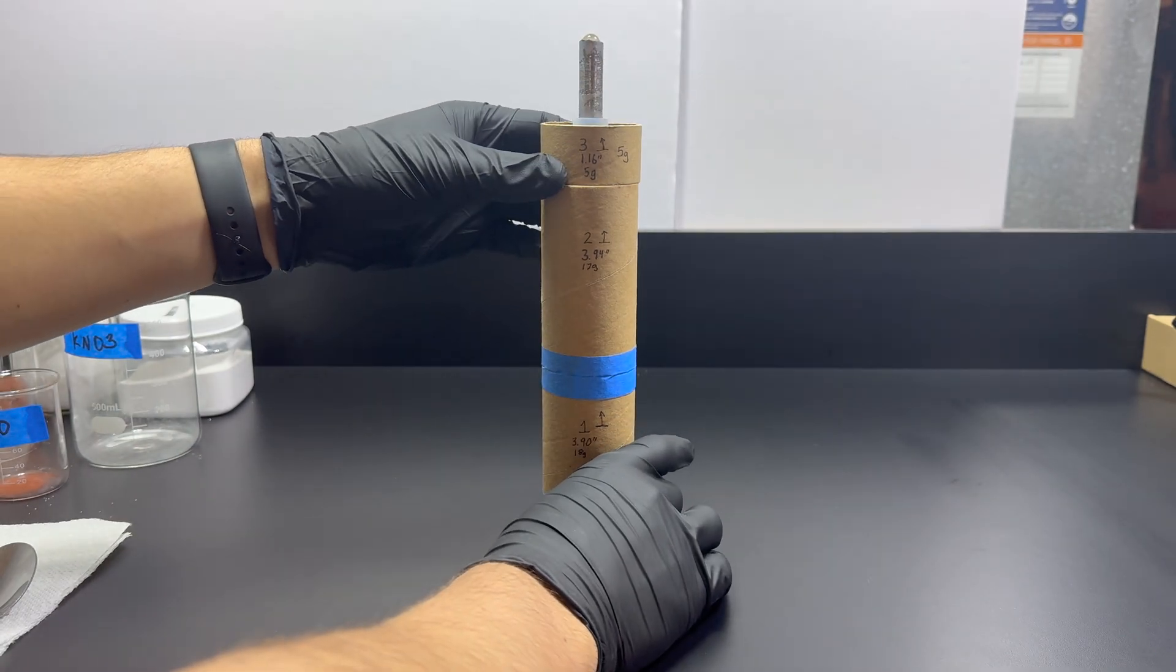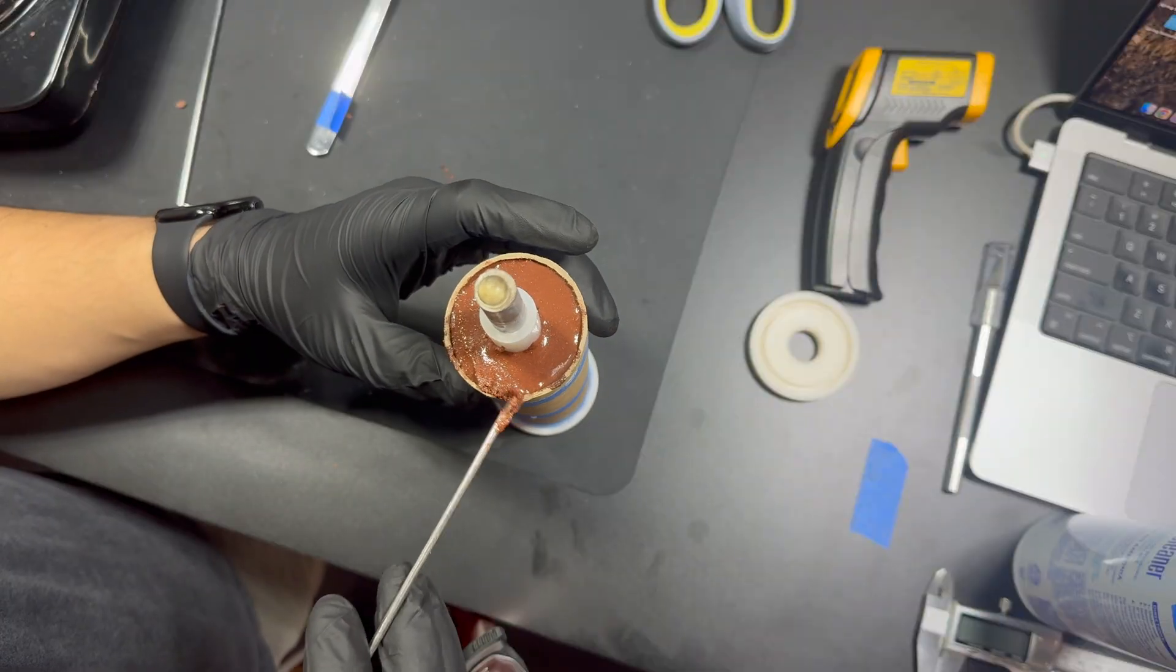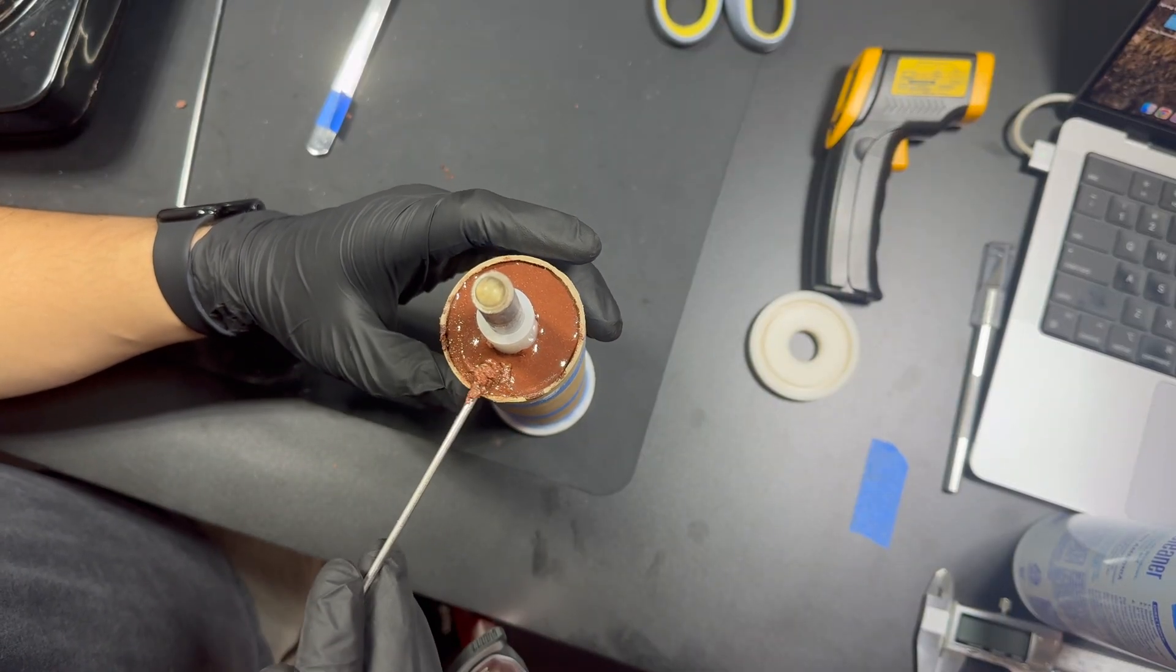Before the fourth pour, I add the final liner segment. Then I add the last full pour of propellant. It may look like it's done, but once it sets, the propellant will shrink.